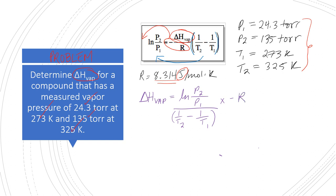So if we plug all these numbers in, what do we have? We have equals ln of our P2 is 135 torr, our P1 is 24.3 torr. The torr cancels, so I'm actually not going to write down the units. It doesn't matter. And we're going to divide this by one over T2, which is 325 K minus one over T1, which is 273 K, times 8.314 joule per mole dot kelvin.